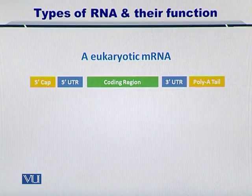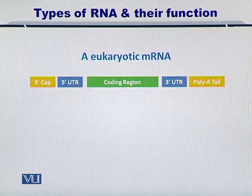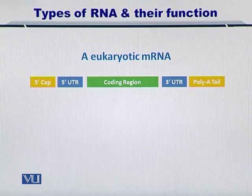A cartoon is shown here for you to summarize the entire structure of the mRNA. On the left side there is the five prime cap, followed by the five prime UTR — the untranslated region. After that, the green coding region starts and it ends at the three prime UTR, followed by the poly-A tail.